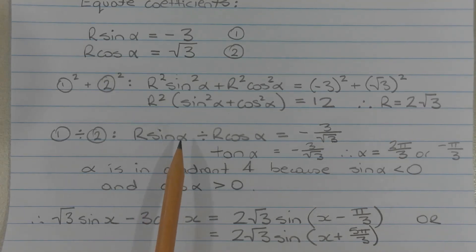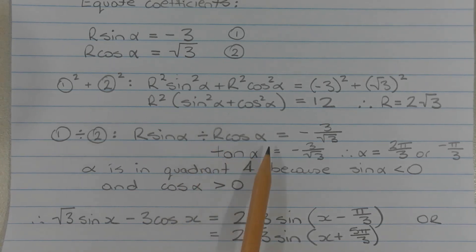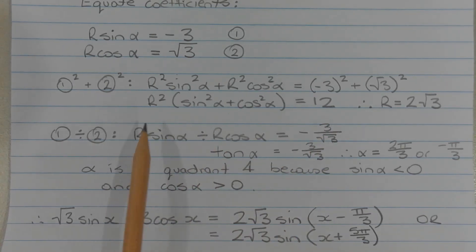To find the value of alpha, we need to eliminate the r, and we do that by taking equation number 1 and dividing it by equation number 2. So r sine alpha divided by r cos alpha is equal to negative 3 over the square root of 3. The r's will cancel, and sine alpha divided by cos alpha is equal to tan alpha. So tan alpha is equal to negative 3 over root 3.